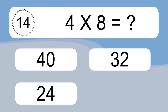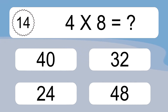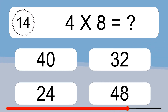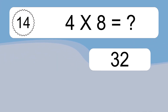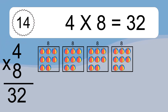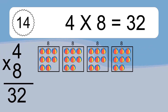4 times 8 equals what? We have 4 boxes, and each box has 8 colorful balls inside. If you count all the balls in all the boxes together, you will have 4 times 8 balls. This equals 32 balls.